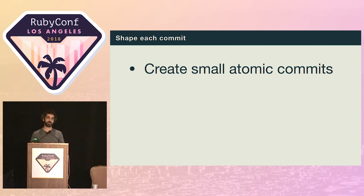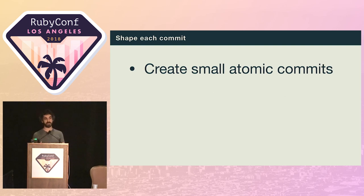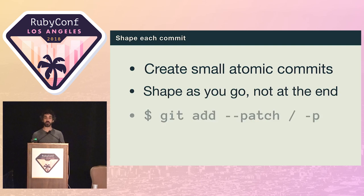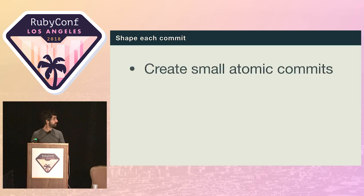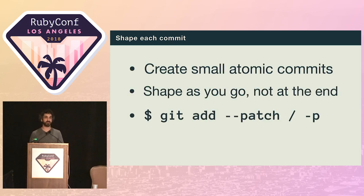Joel Chippendale gave a great talk called 'Telling Stories with Your Git Commit Messages,' and in it he talks about the idea of a minimum viable commit. If you find yourself using the word 'and' in a commit message, perhaps there's another commit trying to break out. Think of each commit as almost like a mini pull request that gradually builds up on the work you're trying to deliver. And thinking about the shape of your commits as you go is going to make your life a lot easier instead of rebasing everything right at the end.